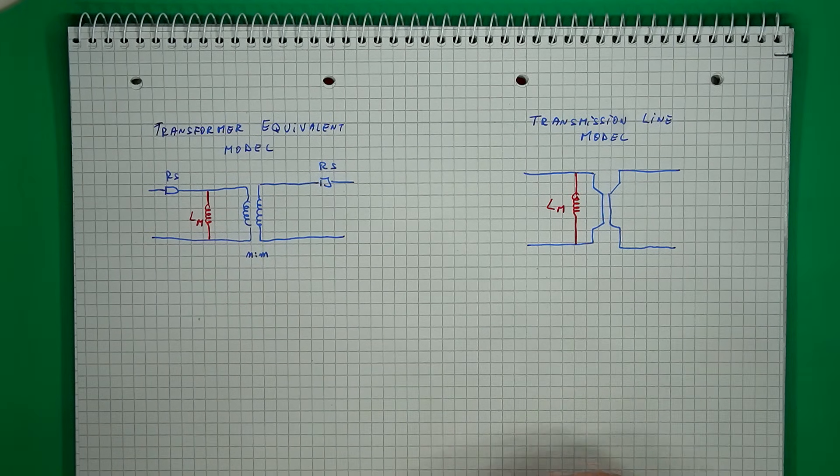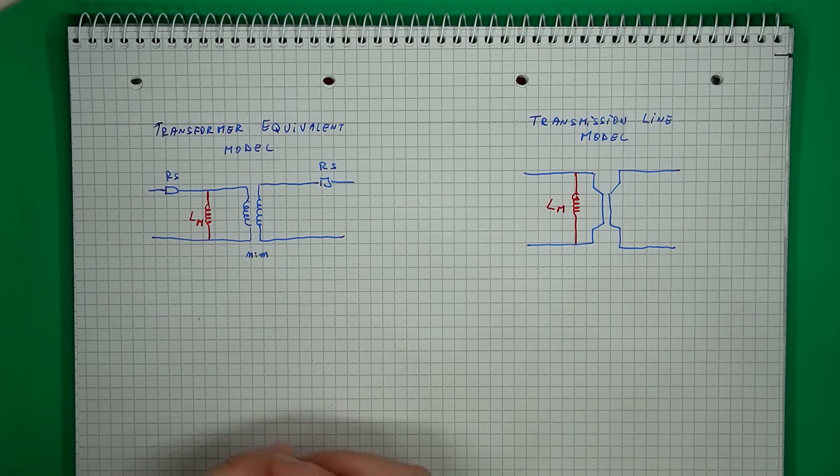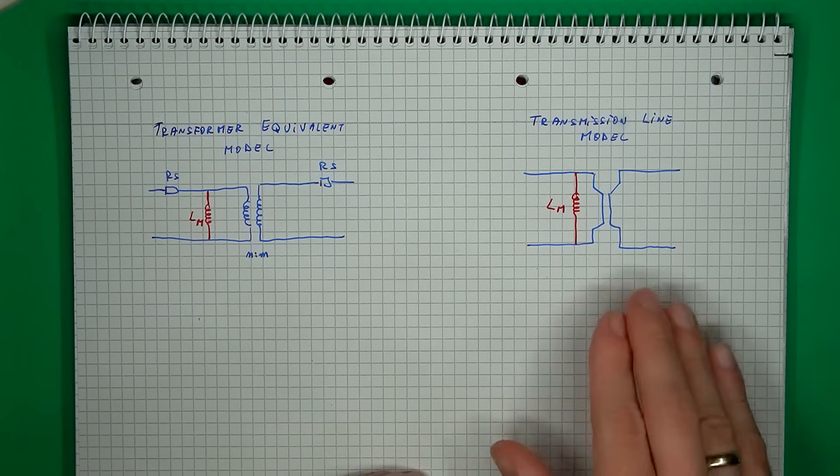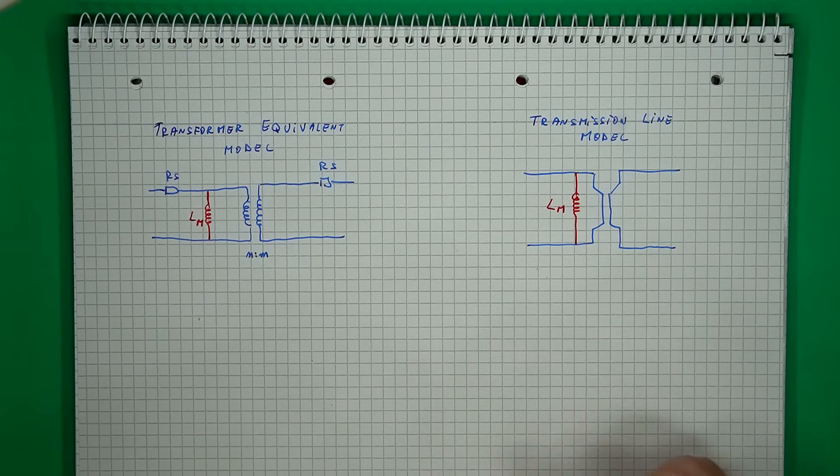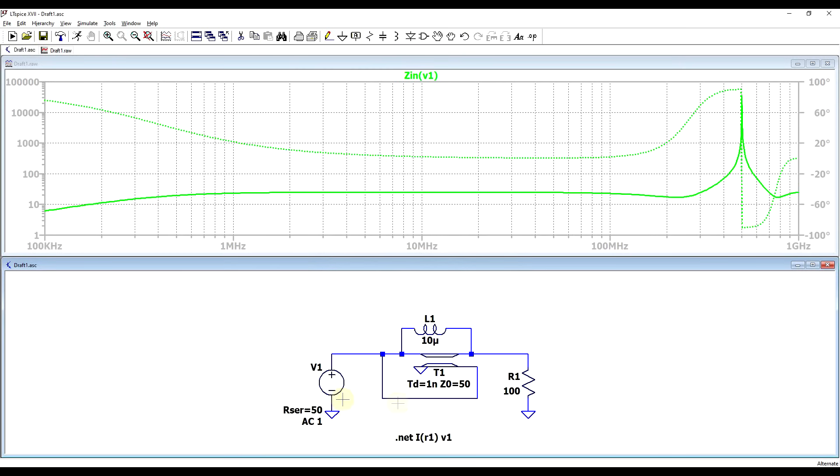To get the correct low frequency behavior on the transmission line, we need to somehow add the same magnetizing inductance that was present in the model of the transformer. So if we add this inductor, we should get the correct low frequency behavior characteristic of the transformer, but also keep the high frequency behavior characteristic of the transmission line. So back in the circuit simulator, I added an inductor in parallel with the transmission line, and if we rerun the simulation...